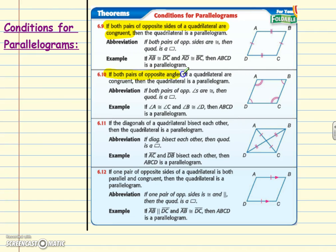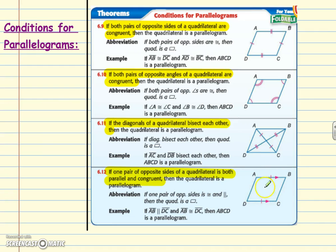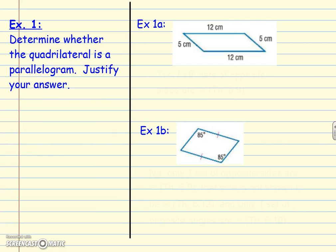Theorem 6.10: if both pairs of opposite angles of a quadrilateral are congruent, then it's a parallelogram. Theorem 6.11: if the diagonals of a quadrilateral bisect each other — meaning they have the same midpoint — then the quadrilateral is a parallelogram. Theorem 6.12 is a little different: if one pair of opposite sides of a quadrilateral is both parallel and congruent, then the quadrilateral is a parallelogram — so you only need to focus on one set of sides.